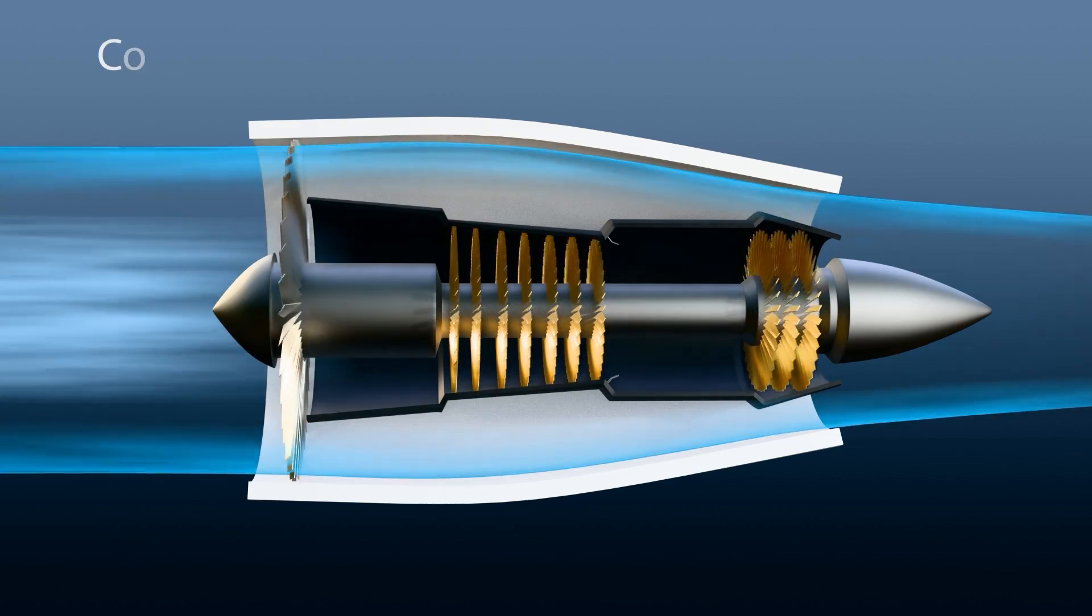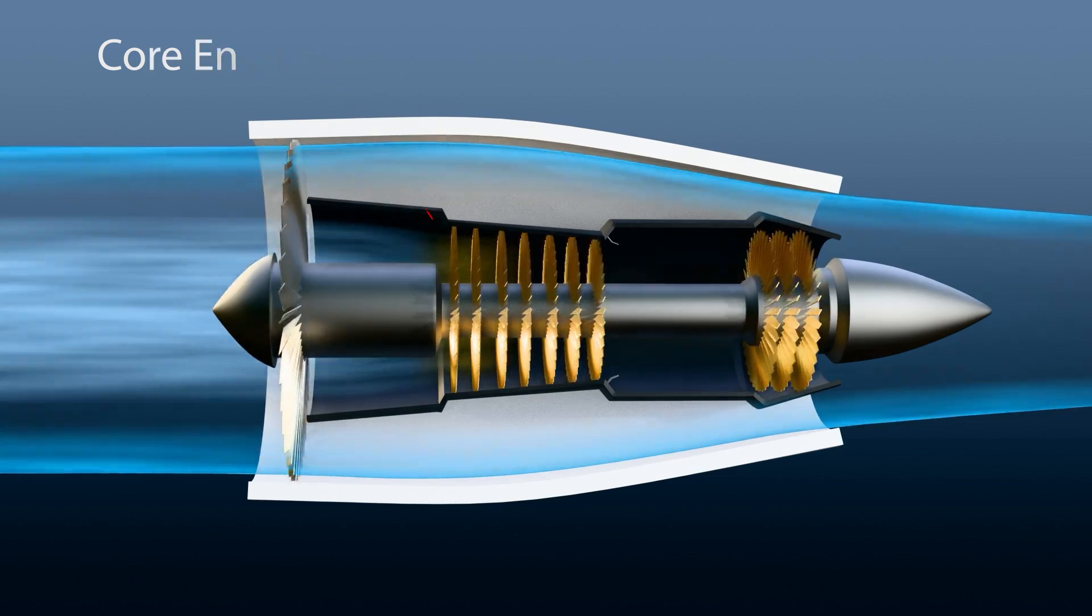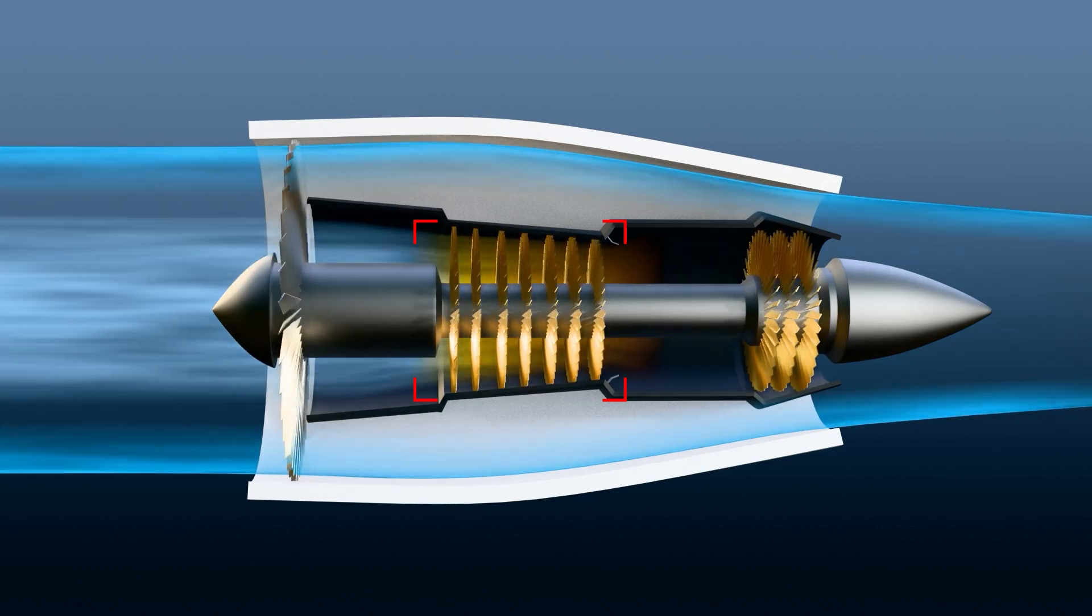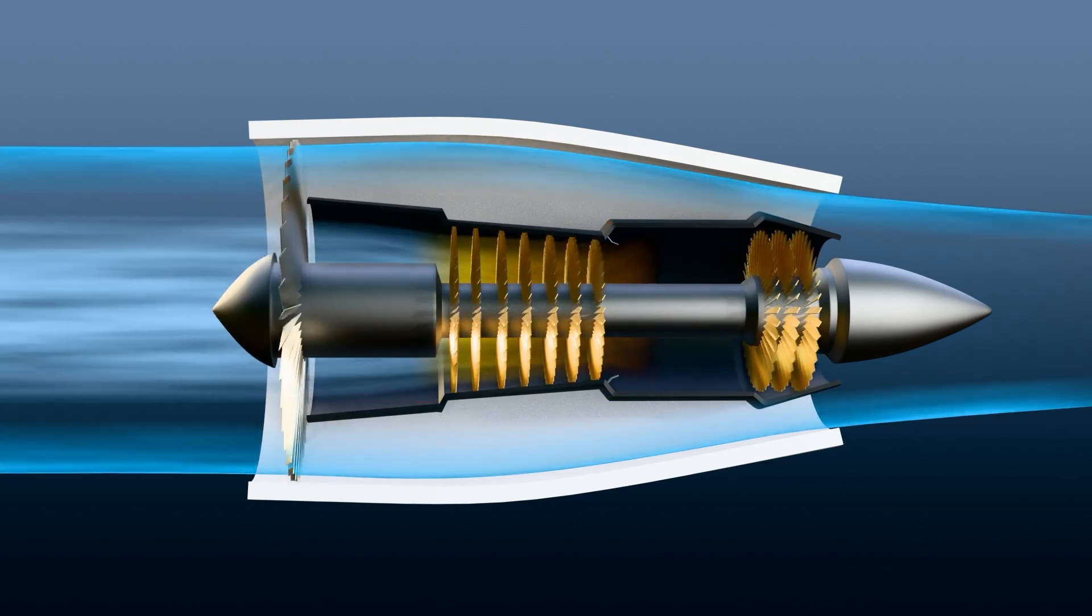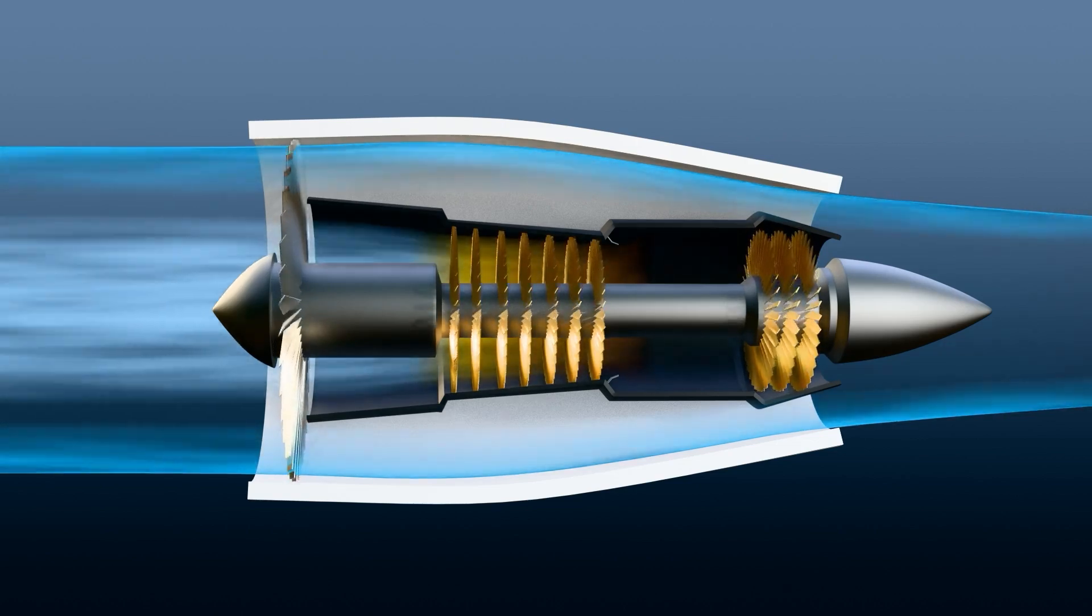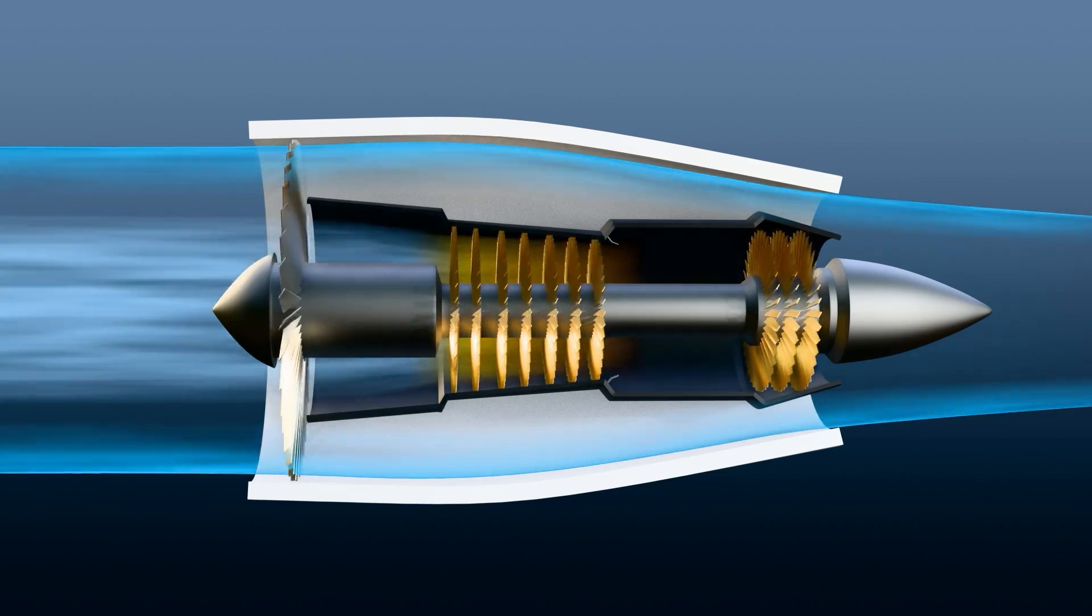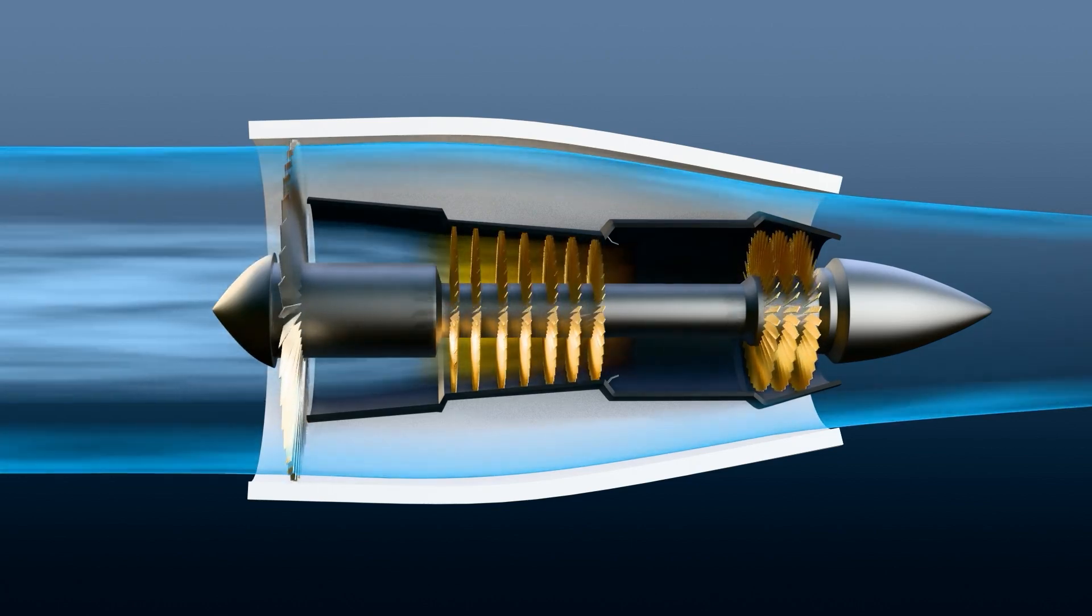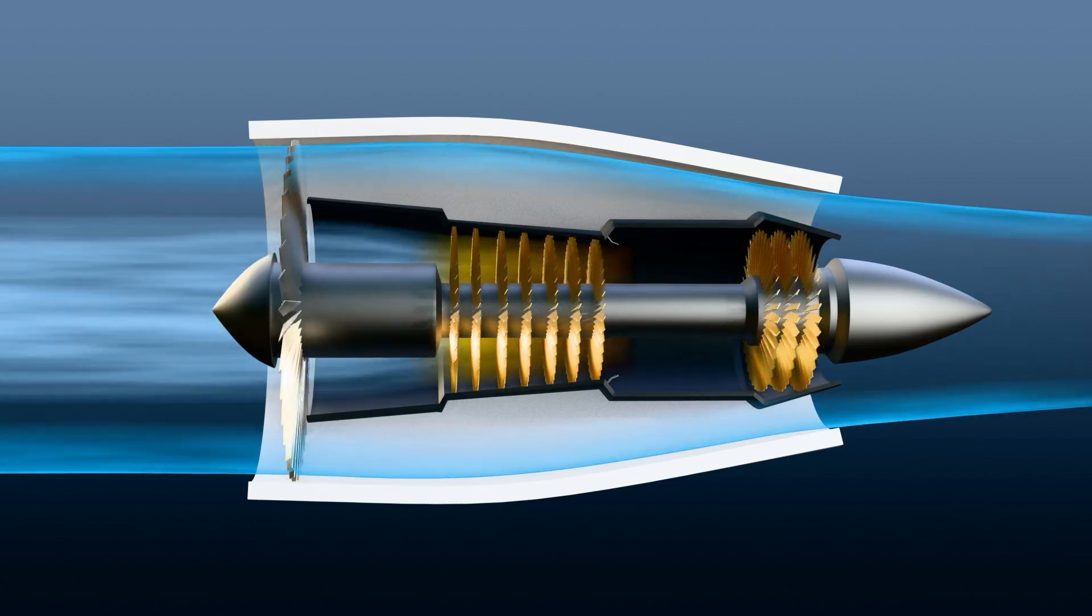The second stream passes through the core engine. Inside the core engine, the air enters the compressor, which consists of a series of fan blades. As the fan blades spin, they compress the incoming air, significantly raising its pressure and temperature. This step is crucial because compressed air burns fuel more effectively.